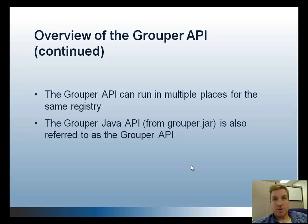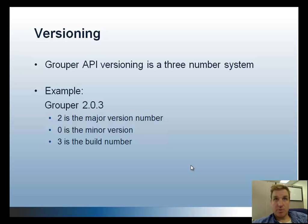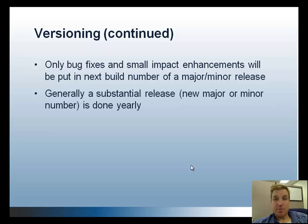The versioning for Grouper is a three-number system — for instance, 2.0.3 — where 2 is the major version, 0 is the minor version, and 3 is the build number. We're only going to put bug fixes and small impact enhancements in the next build number of a release. If there are major enhancements, that will go in the next major or minor release. Generally, we have a substantial release — a new major or minor number — about yearly.